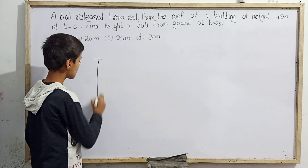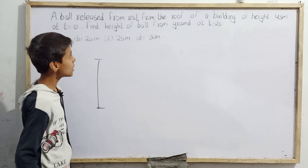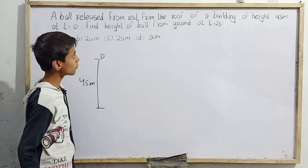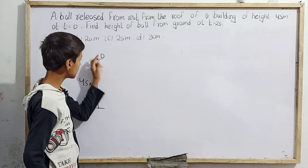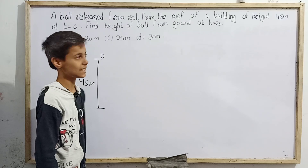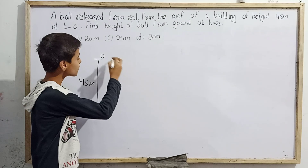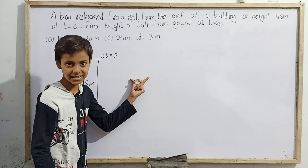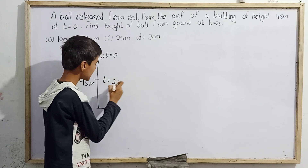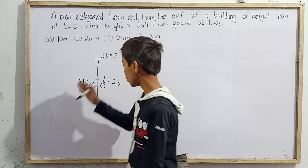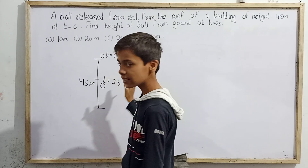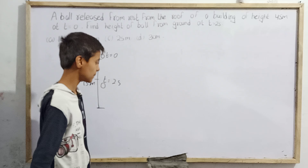The question asks us to imagine a roof of height 45 meters. At the top of the building, any ball is present that is just released. At t equals to zero, we release the particle. After two seconds, at t equals to two seconds, the ball comes to some position. What is the height of the ball from the ground? That is what we have to find — 10, 20, 25, or 30 meters.